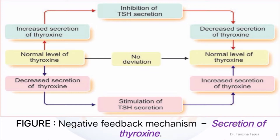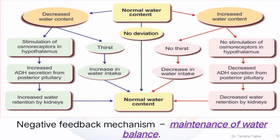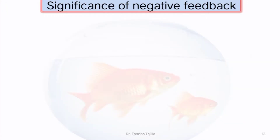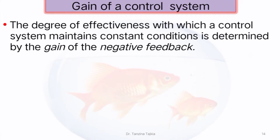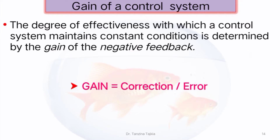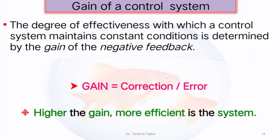Other examples of negative feedback mechanism include the secretion of thyroxine and the maintenance of water balance. The significance of negative feedback mechanism is maintaining homeostasis. Gain is an important topic here — the gain of a control system means the degree of effectiveness with which a control system maintains a constant condition, and it is determined by the gain of the negative feedback.